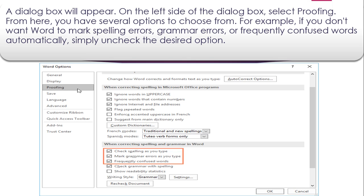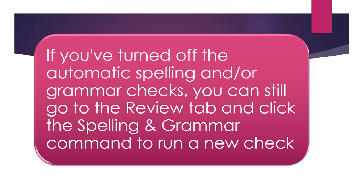From here you have several options to choose from. For example, if you don't want Word to mark a spelling error, grammar error, or frequently confused word automatically, simply uncheck the desired options. If you have turned off the automatic spelling or grammar check, you can still go to the Review tab and click the Spelling and Grammar command to run a new check.